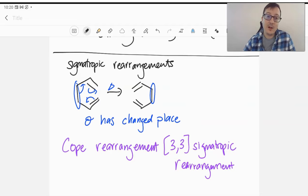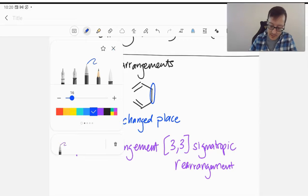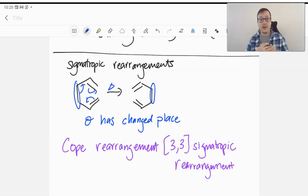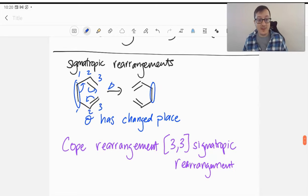Those are identified as 3,3-sigmatropic rearrangements. The numbers in this case are not about the pi electrons as they were when we talked about cycloadditions, like how the Diels-Alder is a 4 plus 2 cycloaddition. With sigmatropic rearrangements, these numbers refer to how many atoms are going to be in between the sigma bond that's being broken on either side. So we see here we have 1, 2, 3 atoms on the top part of that sigma bond.